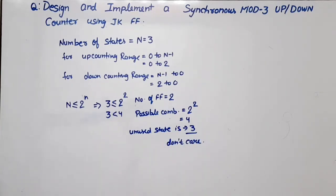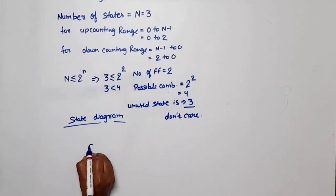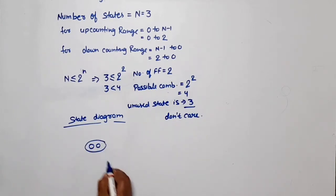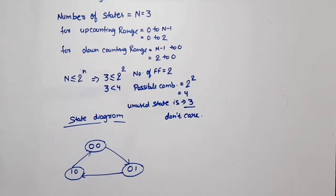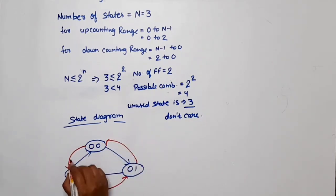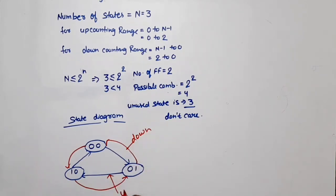Now let's look at the state diagram. For up counting: state 0 (00) → state 1 (01) → state 2 (10), then back to 0. This is for up counting. For down counting: it starts from 2, goes 2 → 1 → 0 → 2. The head of the arrow shows the next state and the tail shows the present state.